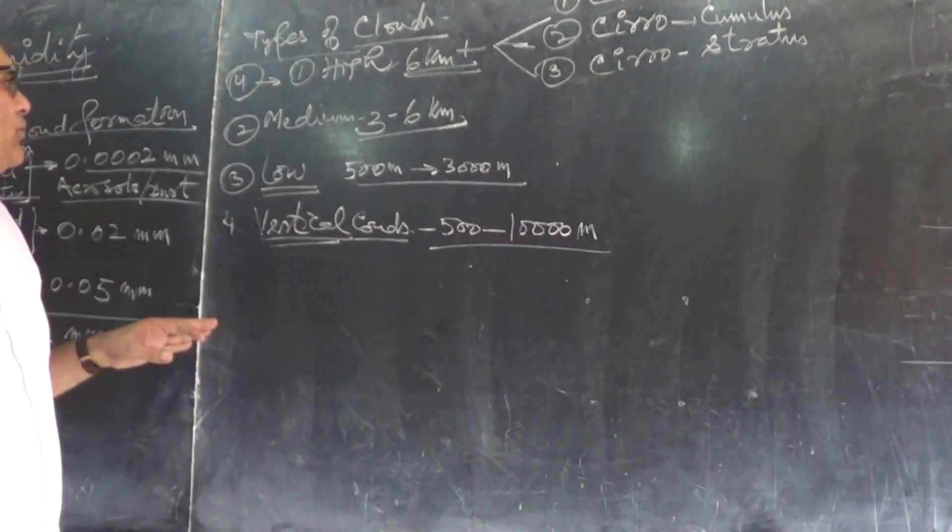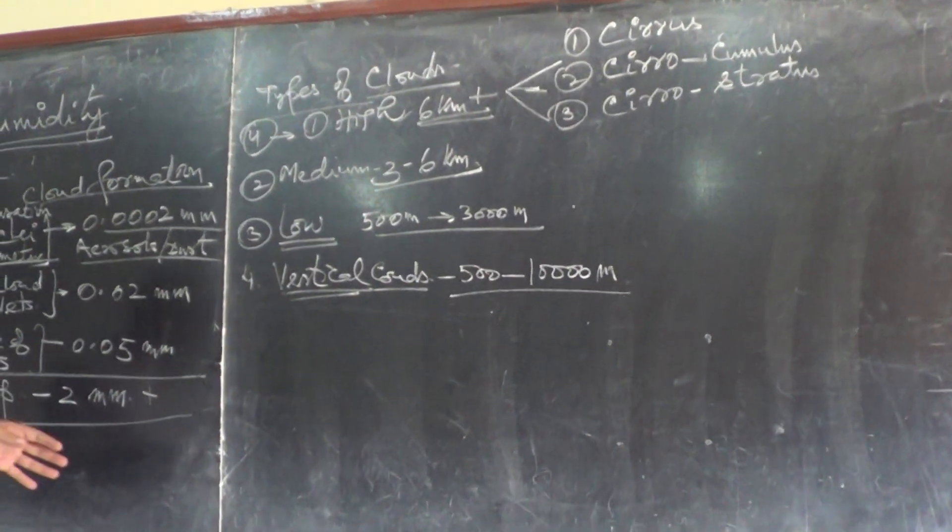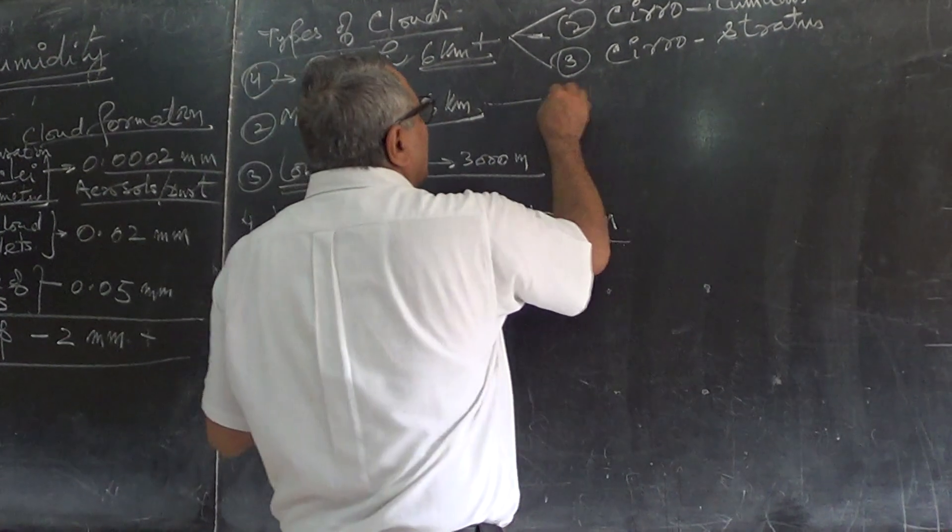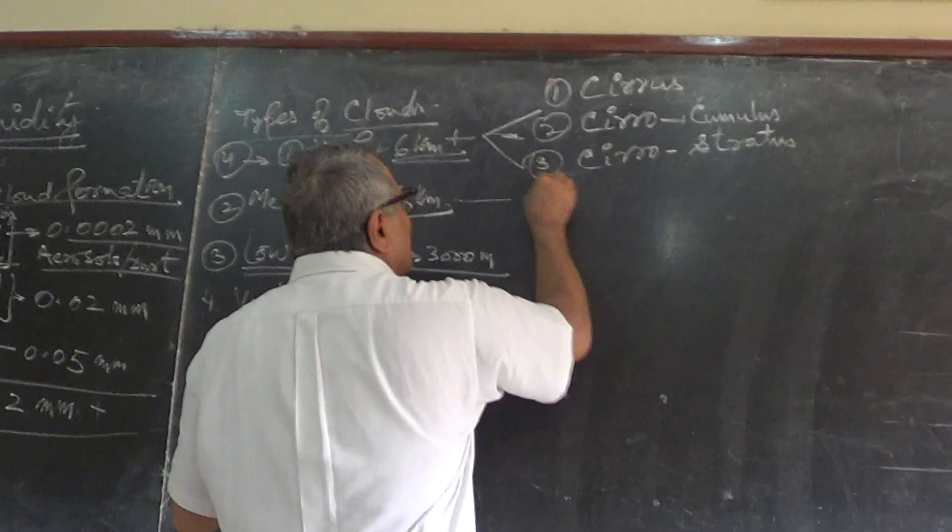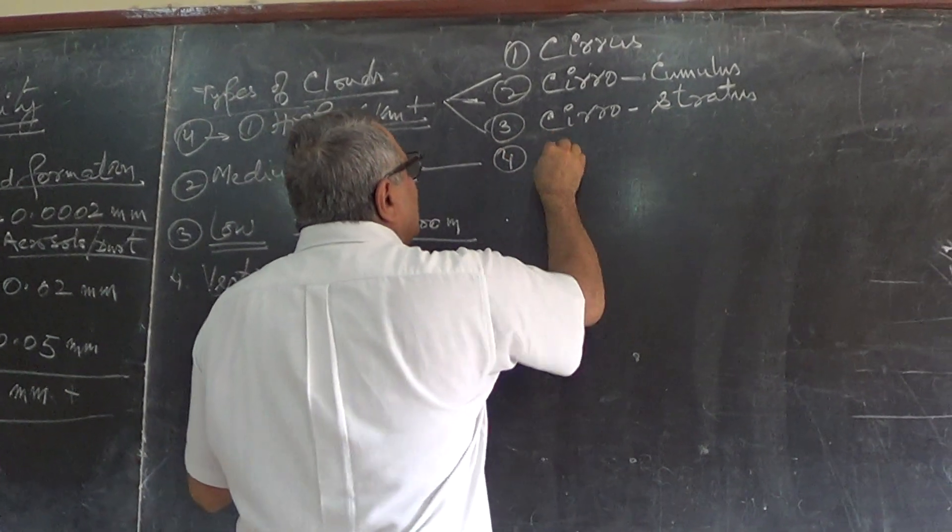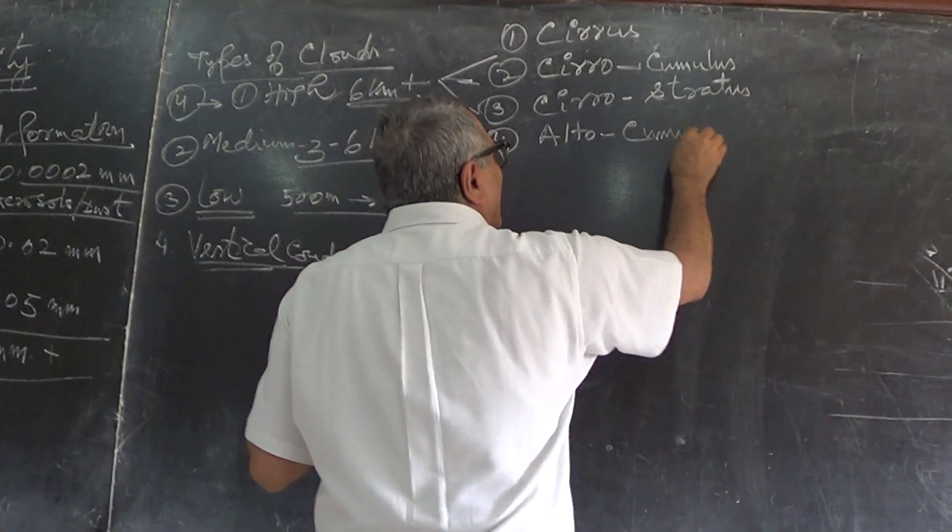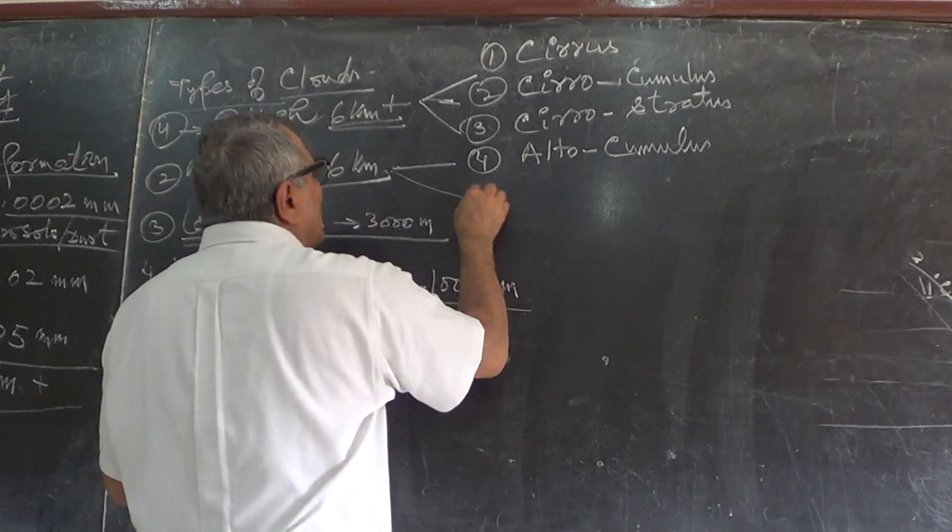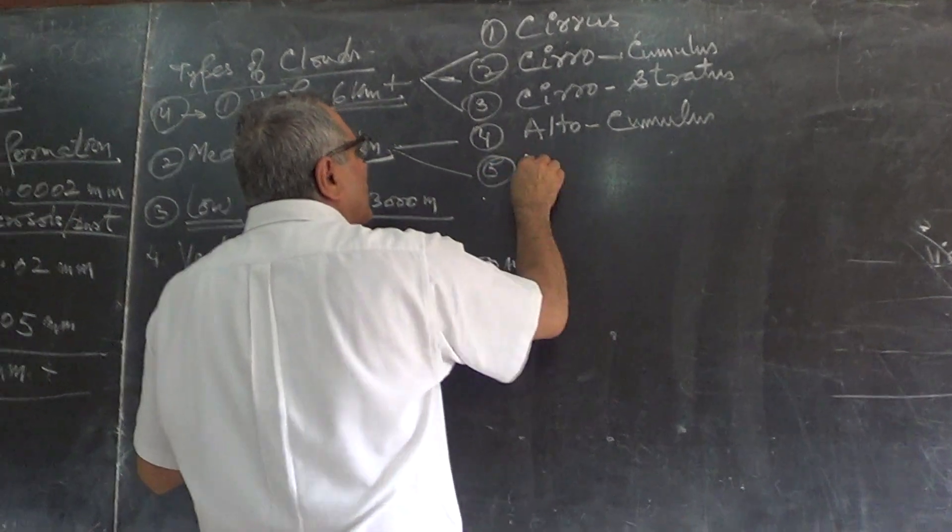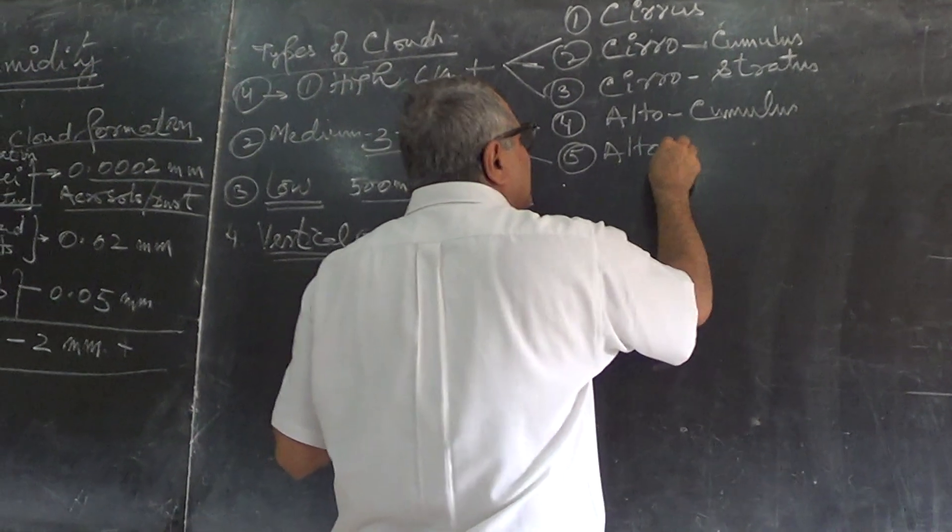We have two types of medium clouds. One is altocumulus and the other one is altostratus.